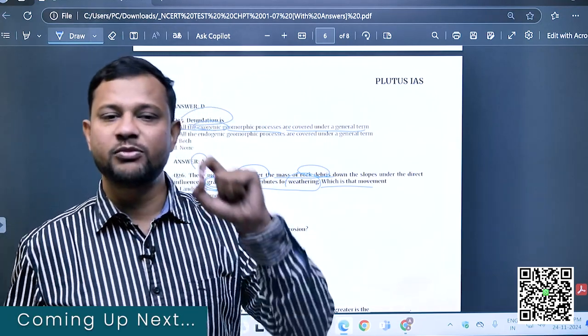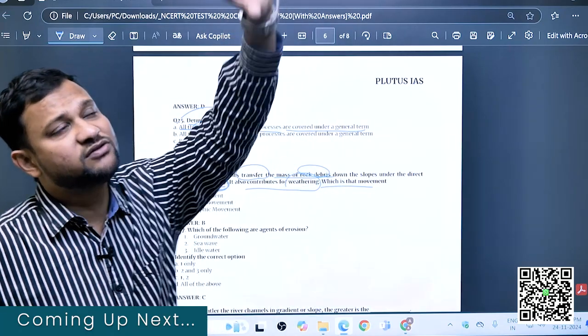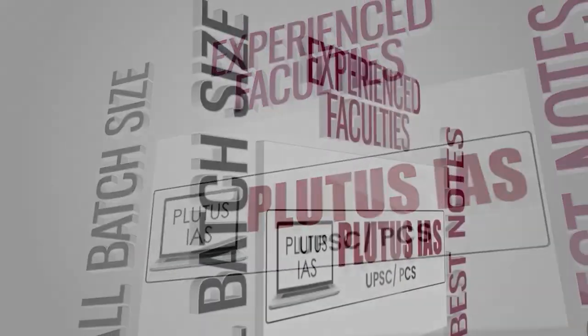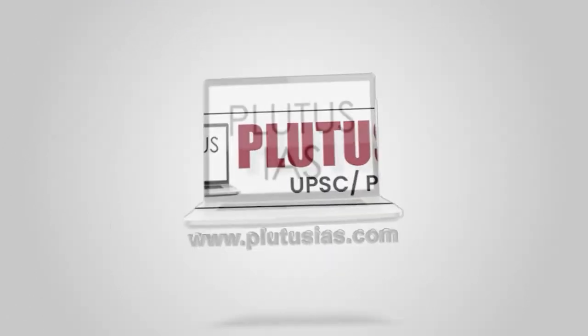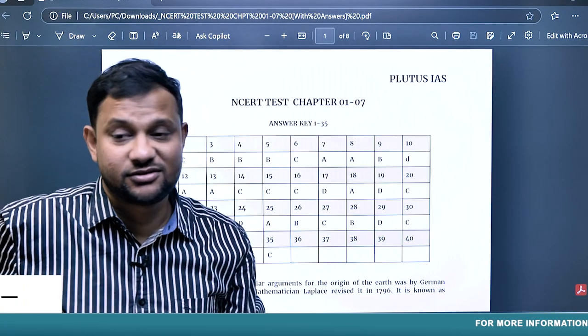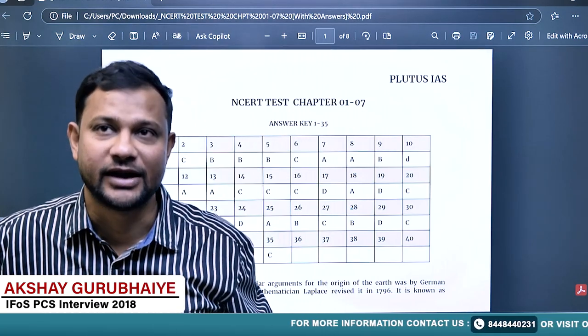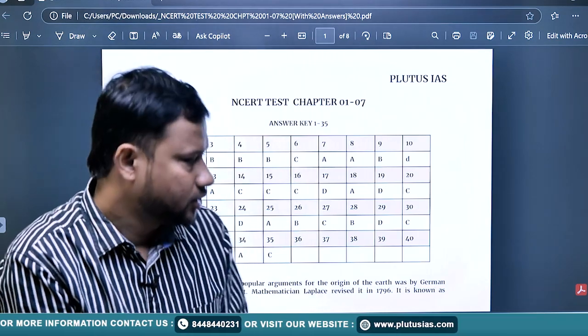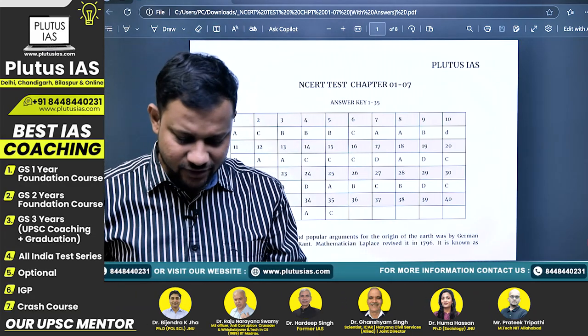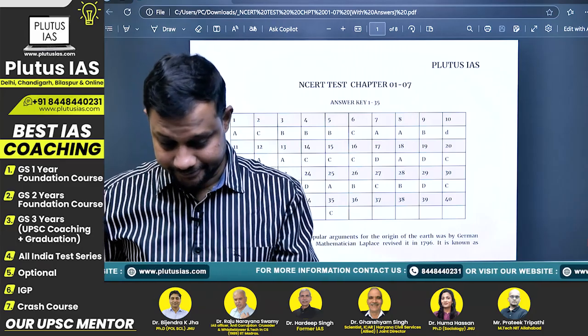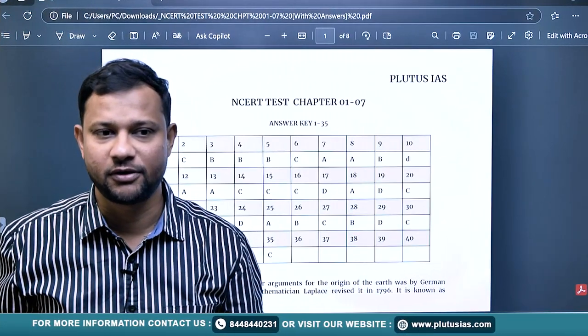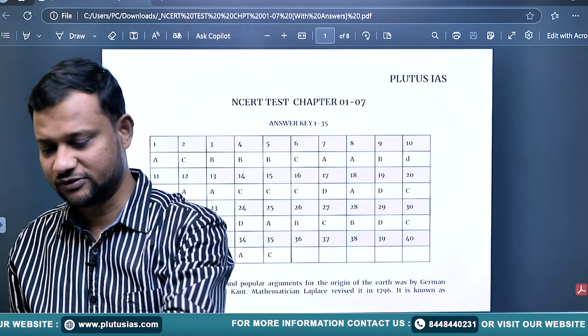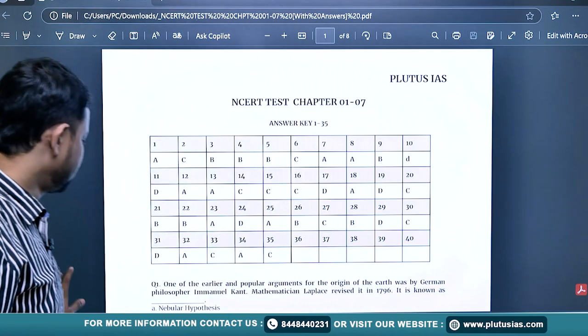Mass movement is simply a process driven by gravity, instead of water, wind, or any other factor. This test discussion is for NCERT Standard 11, Fundamentals of Physical Geography, chapters 1 to 7. The test is comparatively easy. Now let's see the answer key and test discussion, starting with the very first question.